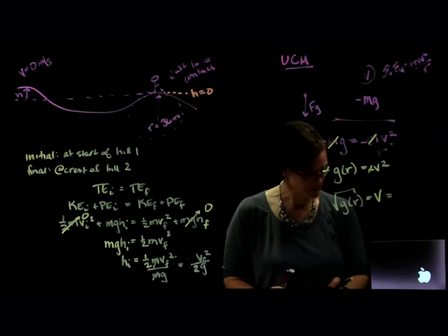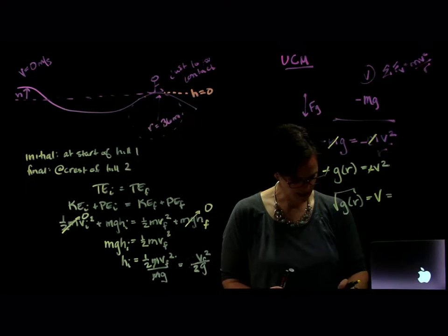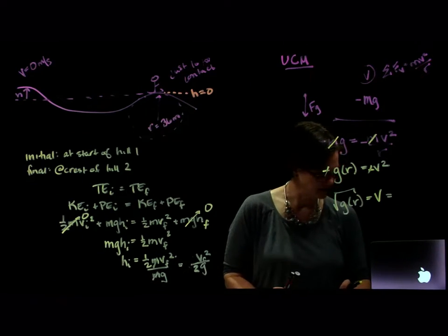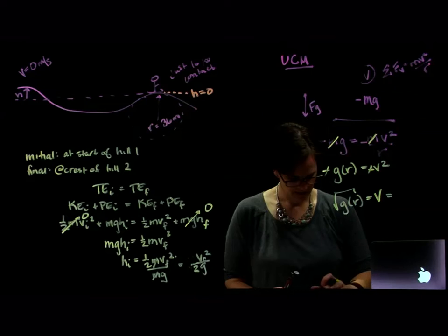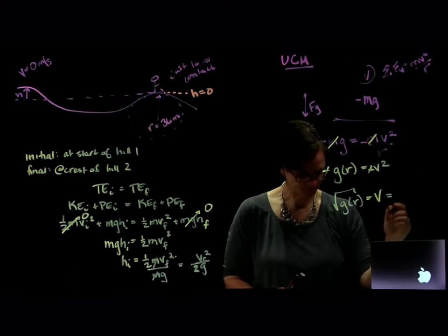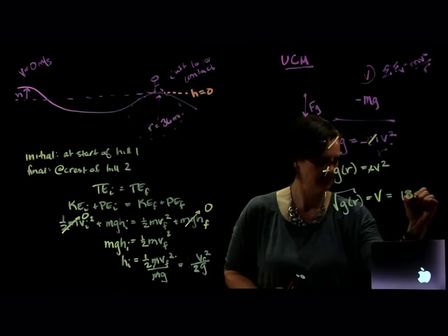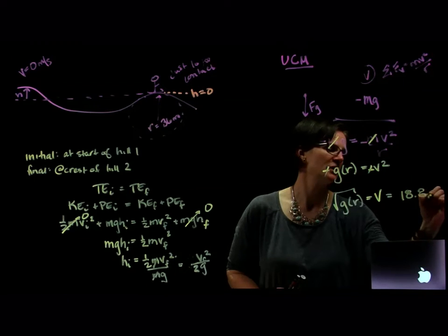So our speed, 9.8 times the radius of 36, take the square root of that, and we get a speed of 18.8 meters per second.